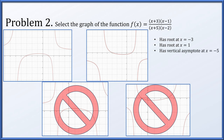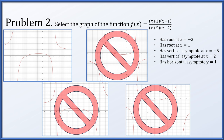We're looking for a vertical asymptote at x = -5 and another at x = 2, but both remaining graphs appear to have those. However, since it's a rational function with numerator and denominator both of degree 2 and both leading coefficient 1, the horizontal asymptote is y = 1. The remaining graph on the right looks like it has a horizontal asymptote at y = -1, so that's out. Therefore the graph is the one in the upper left.